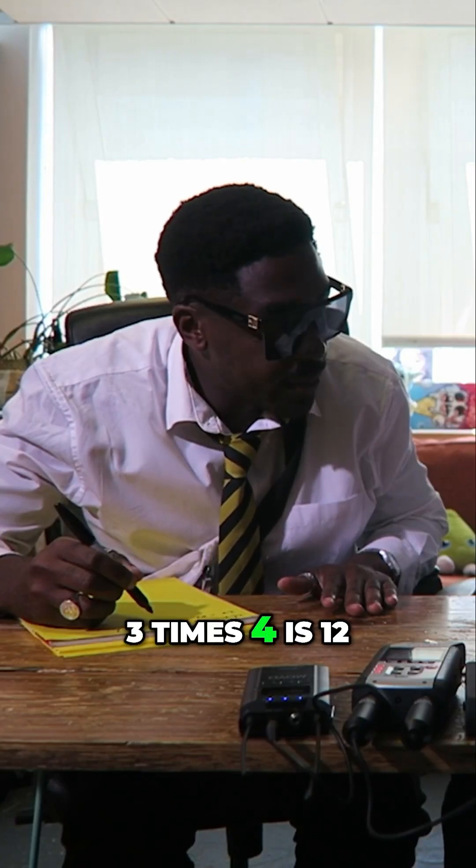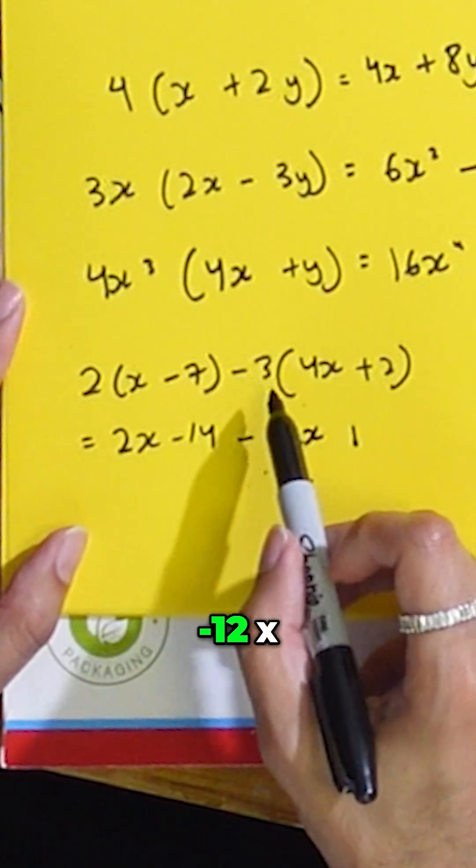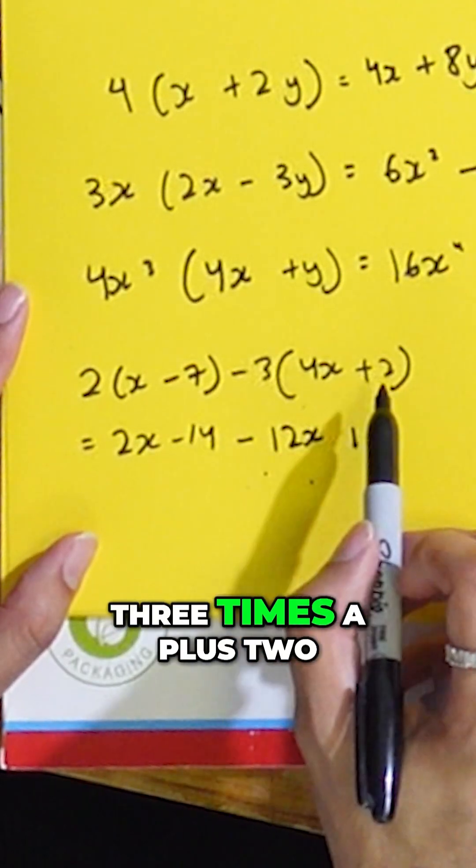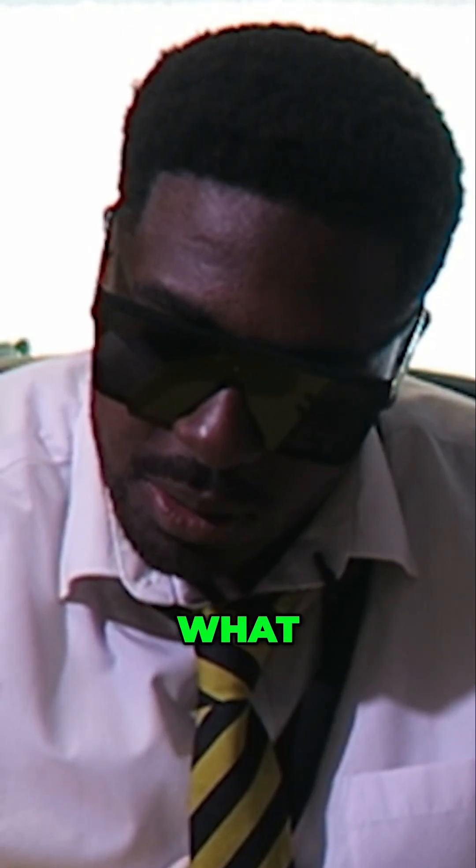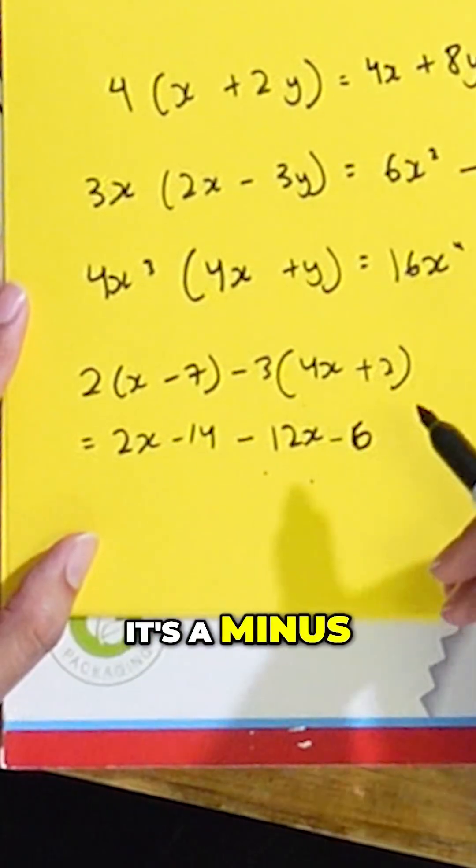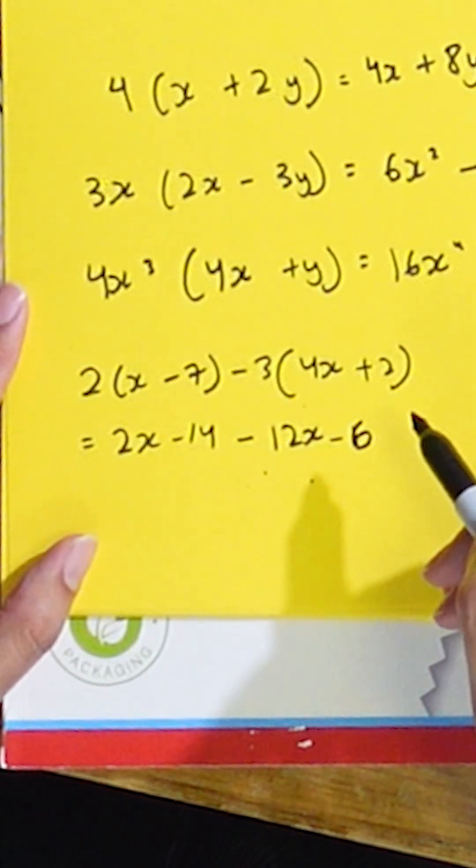Three times four is... Three times four is 12? 12, minus 12 X. Because it's a minus three times a plus two, it's going to be a minus six, isn't it? It's a minus times a plus makes a minus. It's a minus six.